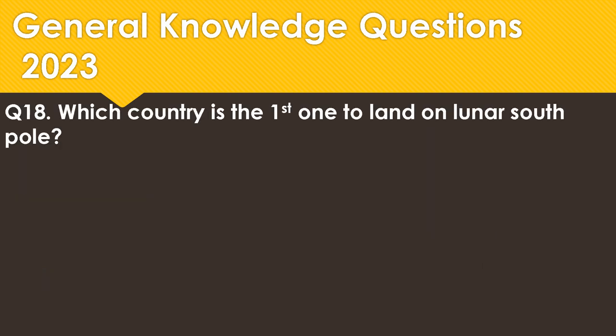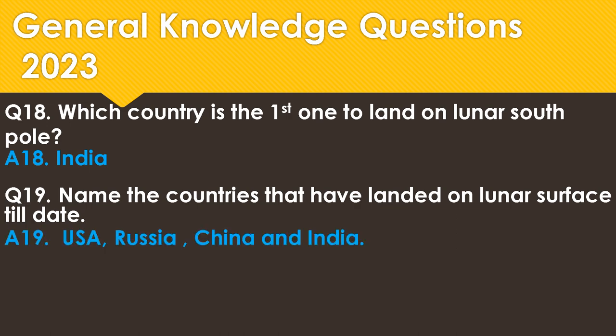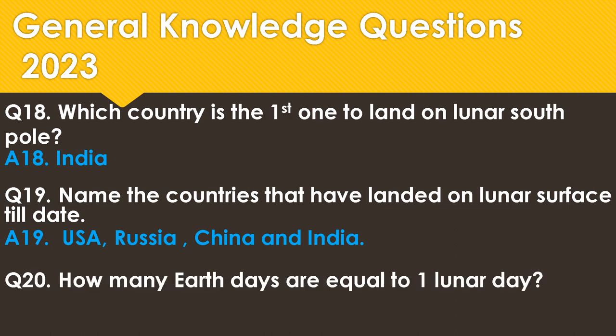Which country is the first one to land on the lunar south pole? The right answer is India. Name the countries that have landed on the lunar surface till date — they are USA, Russia, China, and now India. How many Earth days are equal to one lunar day? One lunar day is equal to 14 Earth days.